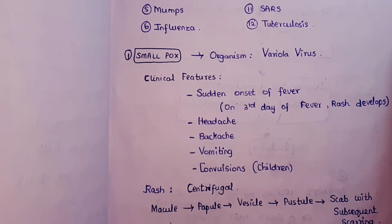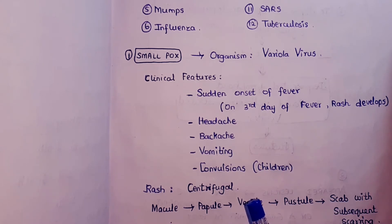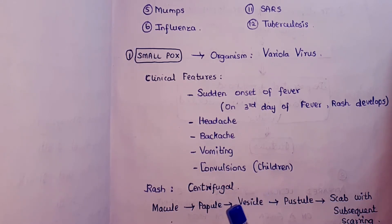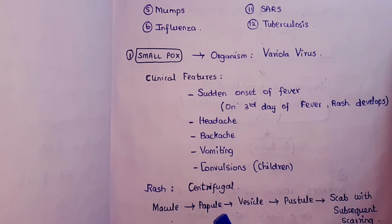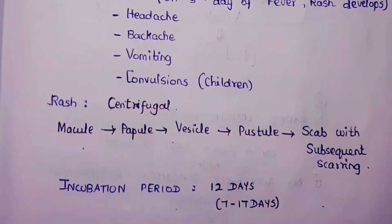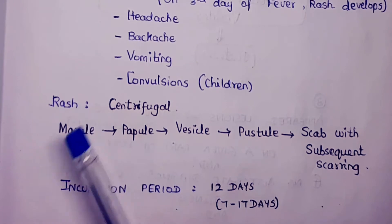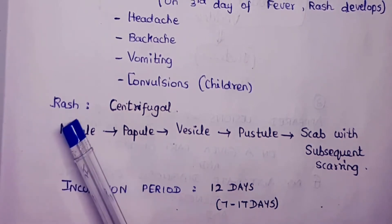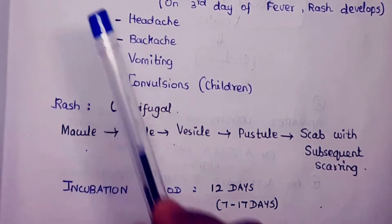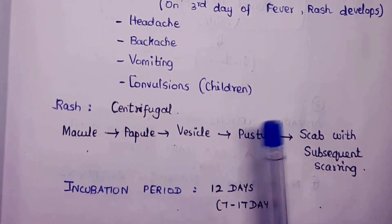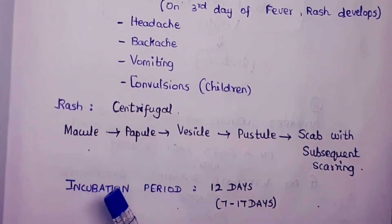The rash is centrifugal in nature — meaning it first appears in the periphery, mainly the face and arms, and then spreads to the central trunk. The armpits are free of rashes in smallpox, whereas in chickenpox the armpits would be affected.